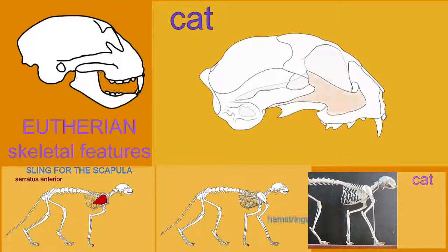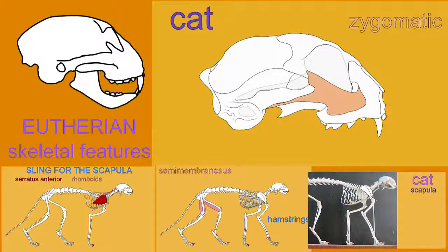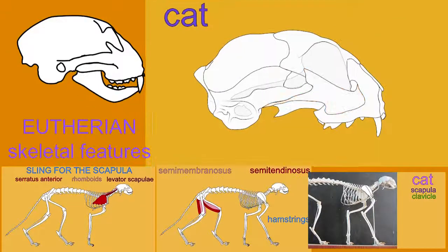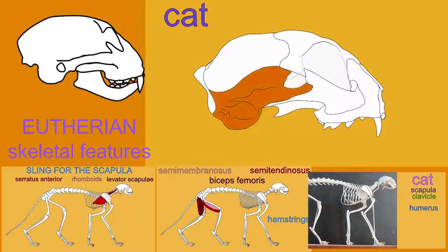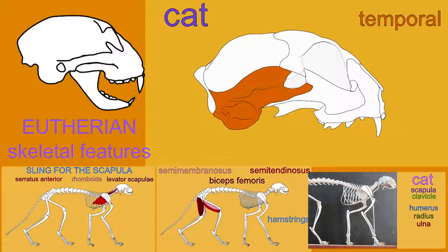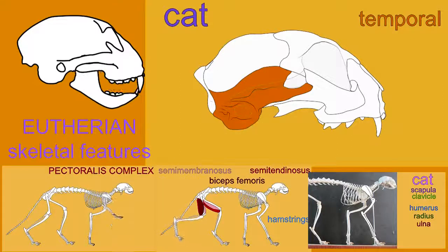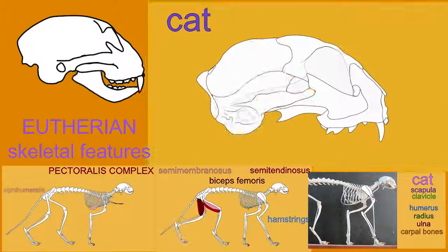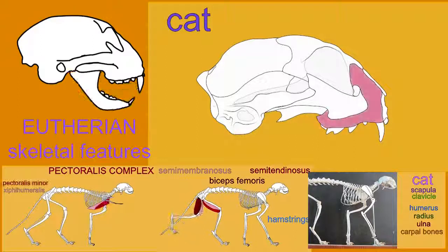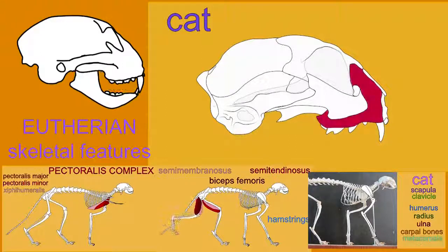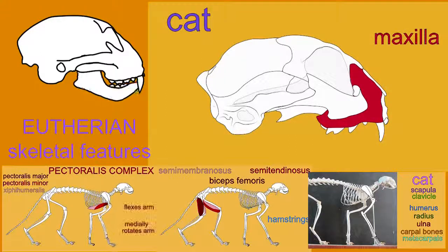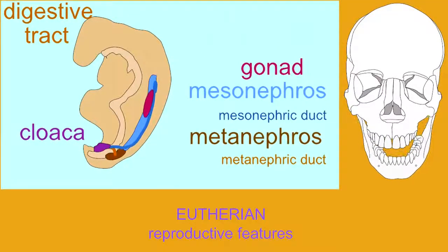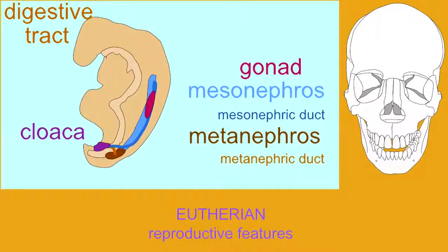There are a number of other changes which unite the eutherian or placental mammals. Some of these are features of the skeletal system. For example, in eutherian mammals, the temporal bone is larger and in the majority develops an auditory bulla which surrounds the tiny auditory ossicles of the middle ear.